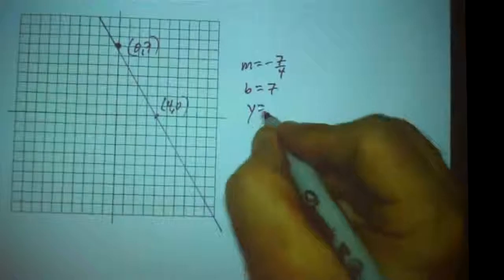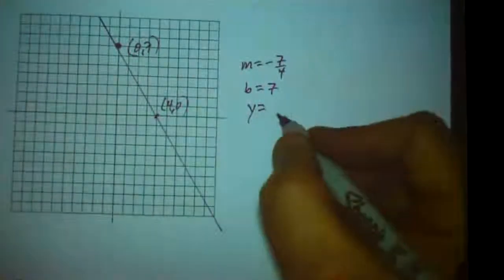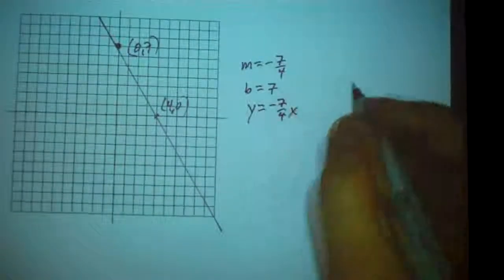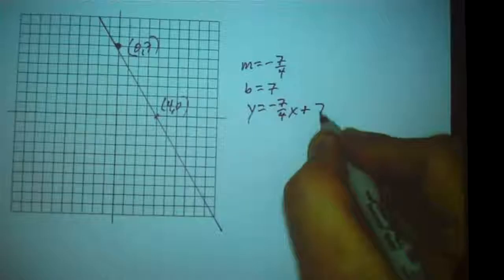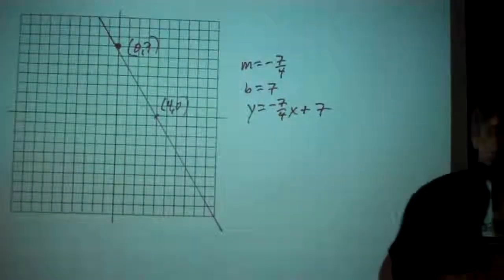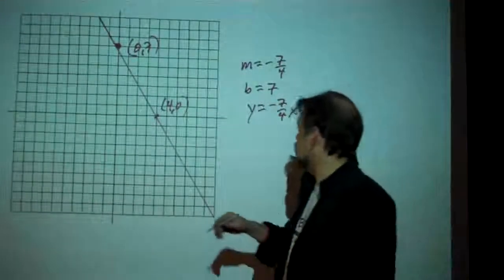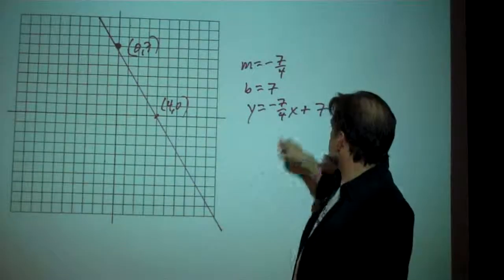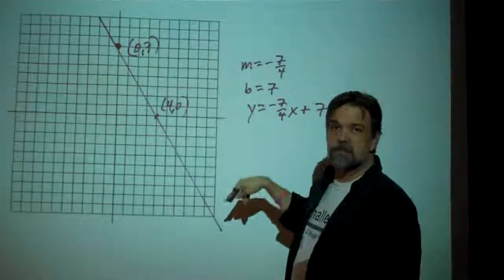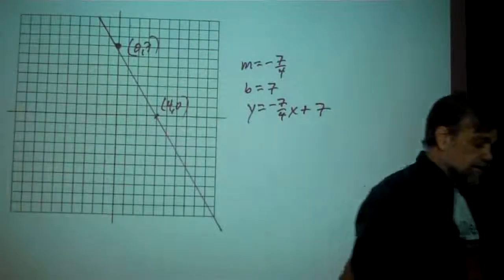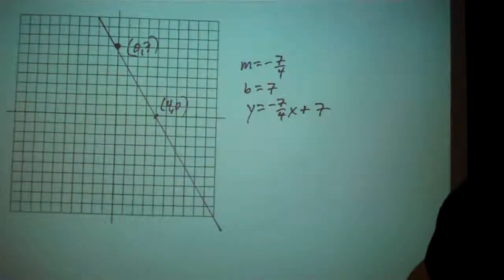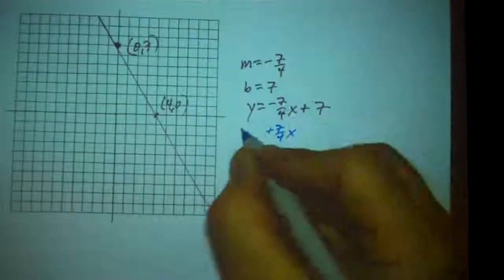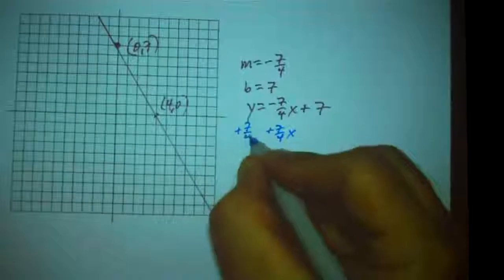So that means my slope-intercept form of the equation is y equals negative 7 fourths x plus 7. Well, if you remember, the standard form of the equation has x and y both on the same side of the equation and the constant alone on the other side. So let's just move our x term over to the left by adding 7 fourths x to both sides of our equation. So I'm going to add plus 7 fourths x here and plus 7 fourths x here.